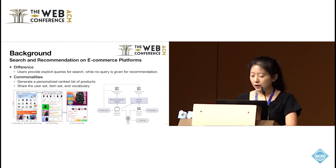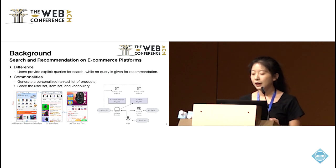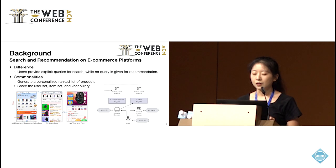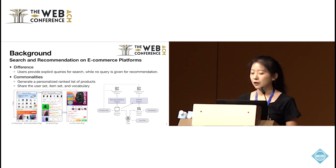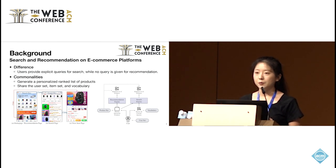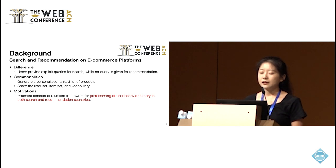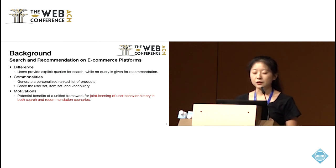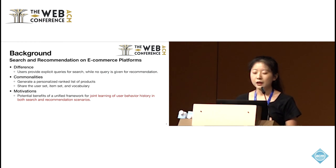Here is an integrated system of recommendation engine and search engine. We can see that the two engines have the same objectives — to generate a personalized ranked list of products. They also share the user set, item set, and vocabulary. Based on these commonalities, there is a general idea that joint learning of user behavior history in search and recommendation scenarios could potentially benefit both scenarios.